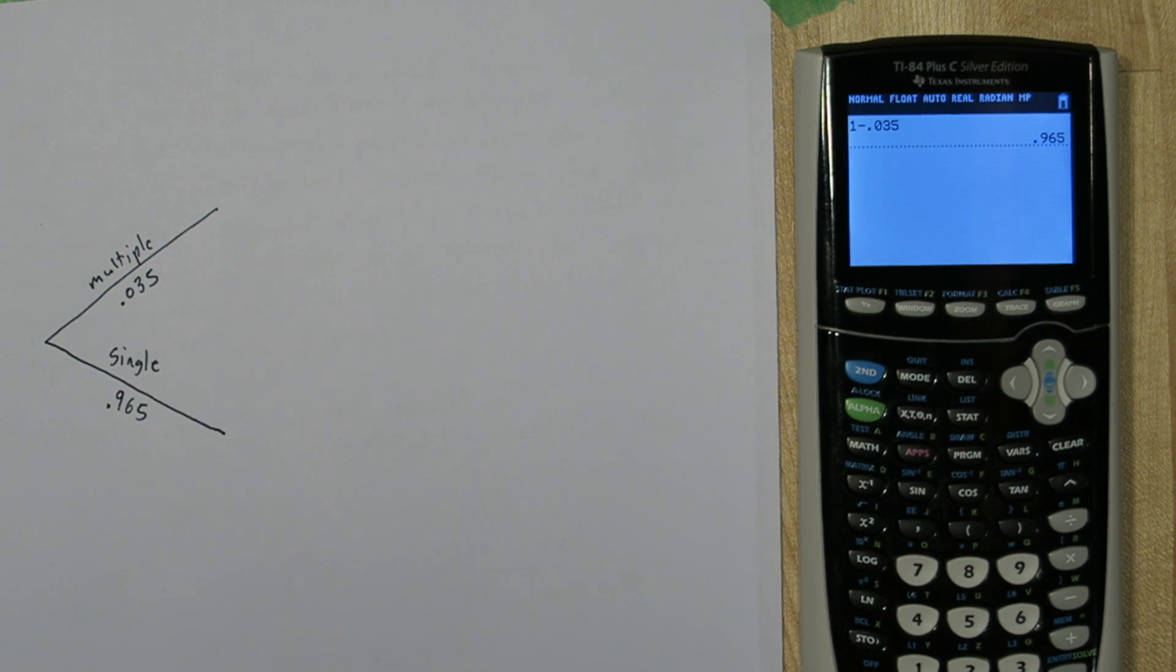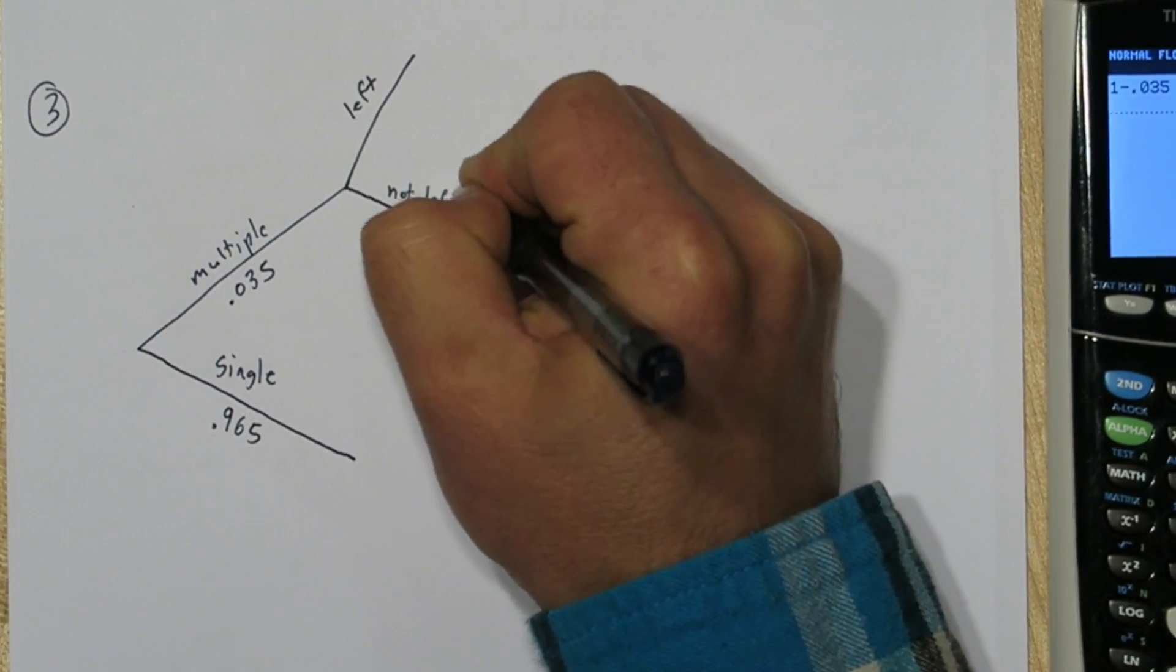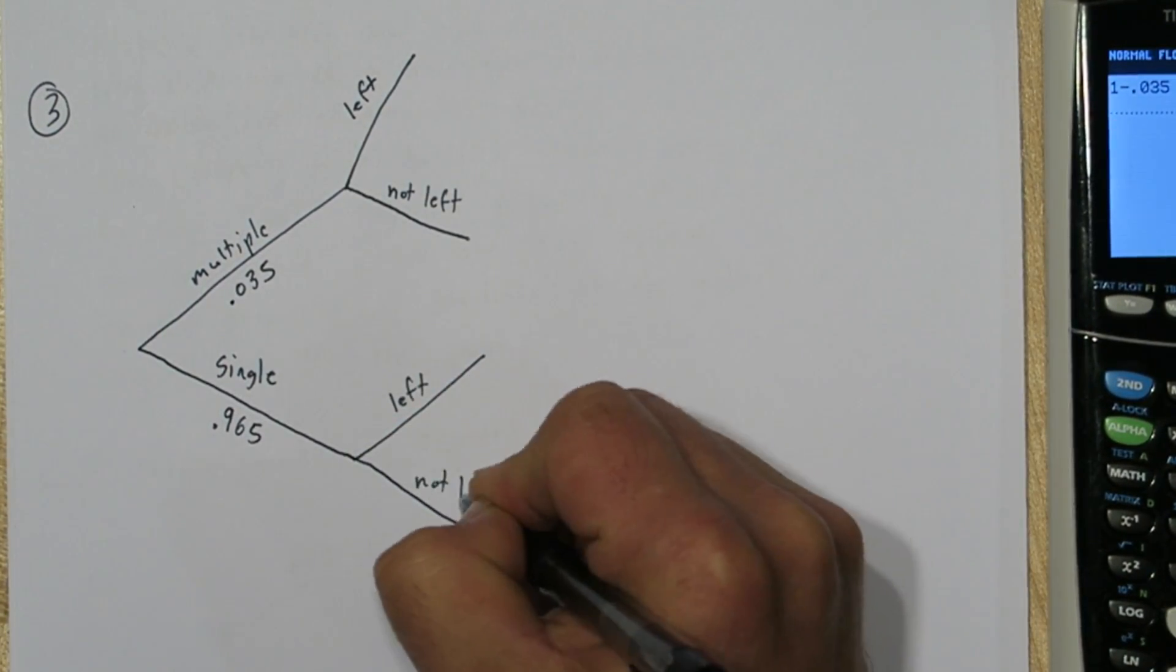So a single birth must have a probability of 0.965. Then for each of these branches you're either left or not left. So we'll draw that for each of those.